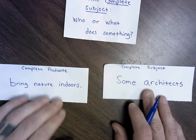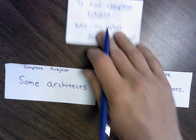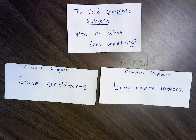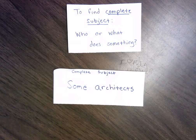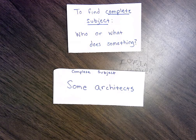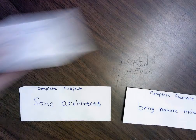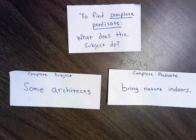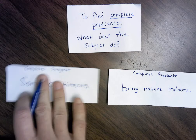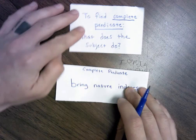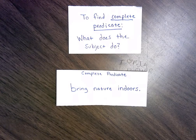Now, how do I find a complete subject or a complete predicate within a sentence? First, you're going to start with the complete subject. To find the complete subject, ask who or what does something. In this sentence, who or what does something? Some architects. Now that I've found the subject, I can determine the complete predicate. To find the complete predicate, ask about the subject: what does the subject do? In this sentence, the subject brings nature indoors. Let's go ahead and apply what we've just learned.